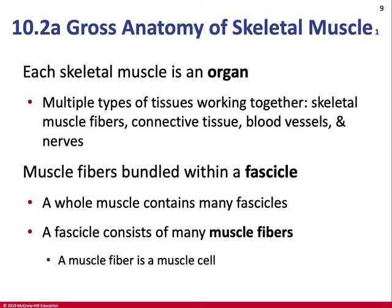A muscle is an organ because it contains a variety of different tissues that carry out a task that a single tissue cannot. It contains muscle tissue, nerve tissue, a blood supply (liquid connective tissue), and connective tissue proper. As a result, that qualifies it as an organ.